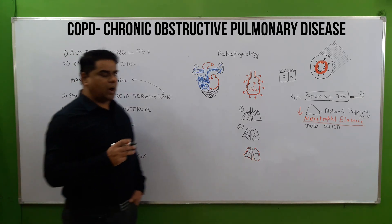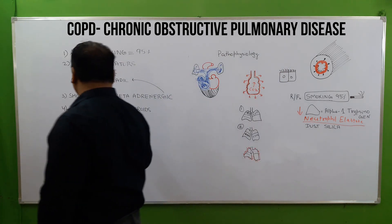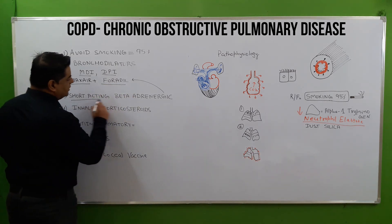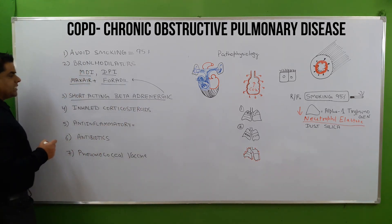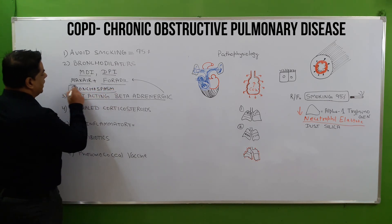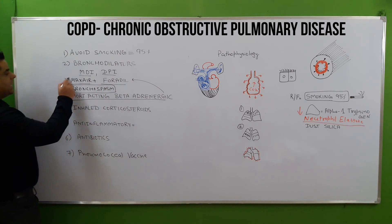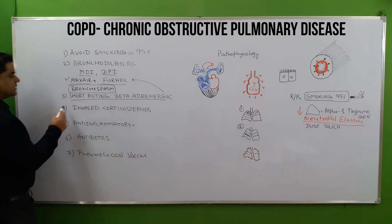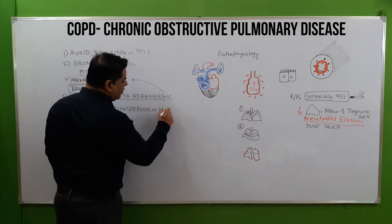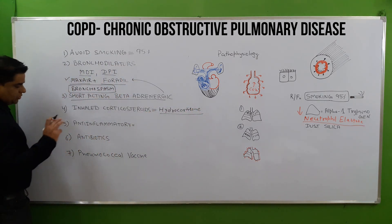DPI are dry powder inhalers and MDI are metered dose inhalers. Drugs include Maxair and Foradil, which is a short-acting beta-adrenergic drug that opens up bronchospasm. Inhaled corticosteroids like hydrocortisone are also used, prepared from cortisol.